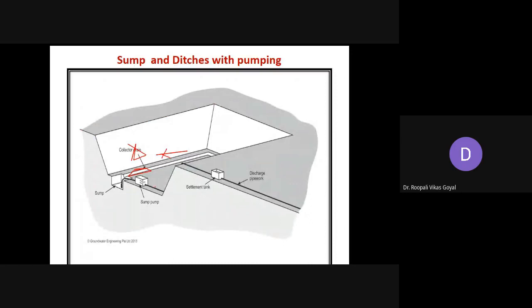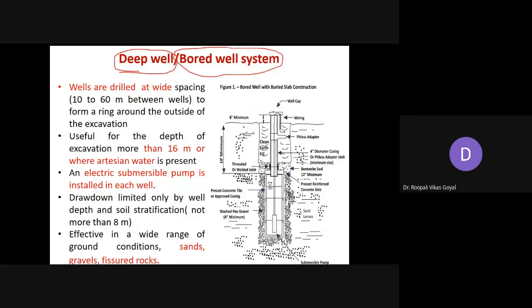The next method is the deep well or bore well system. Wells are drilled at a wide spacing, generally 10 to 60 meters between the wells, to form a ring around the outside of the excavation. It is useful for depths of excavation more than 16 meters and where artesian water is present — artesian water meaning water that comes out automatically due to the pressure of the overlying soil. In these two conditions you can use the deep well system.